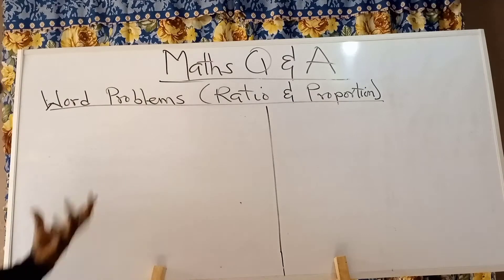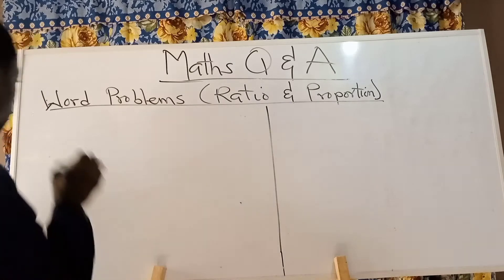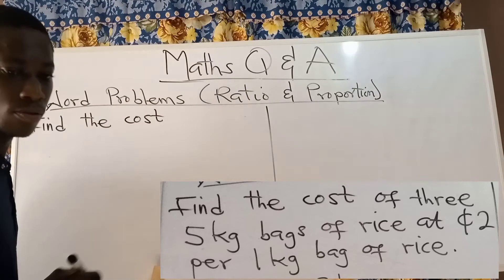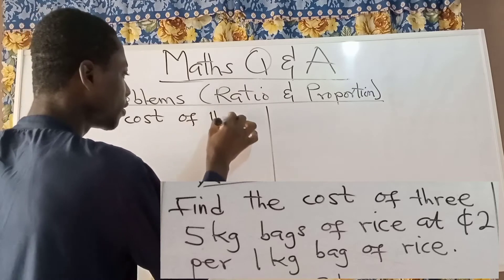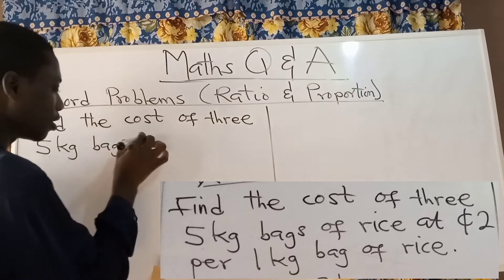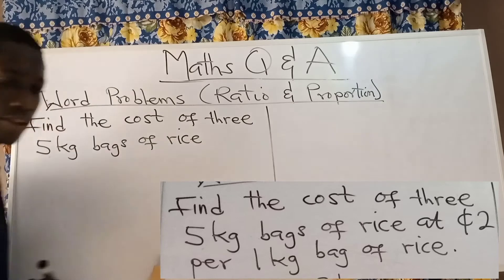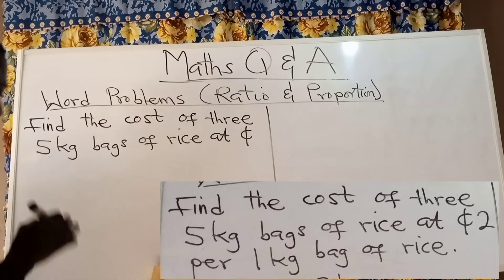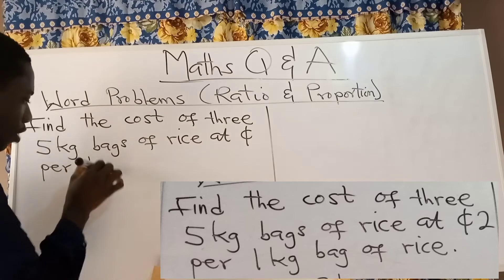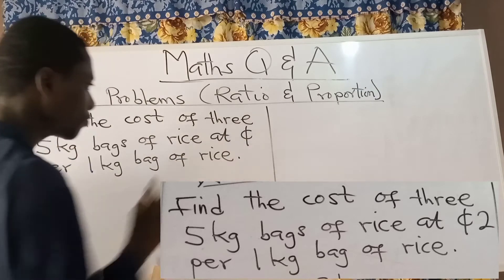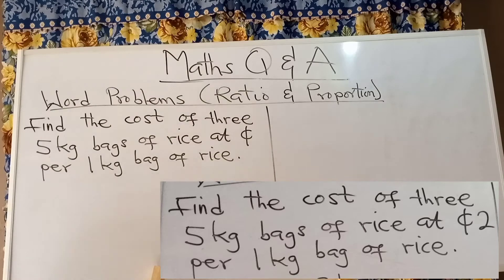Welcome back. Our next word problem question is: find the cost of three five kg bags of rice at two cities per one kg bag of rice. This is a word problem which falls under proportion, and that proportion is direct.